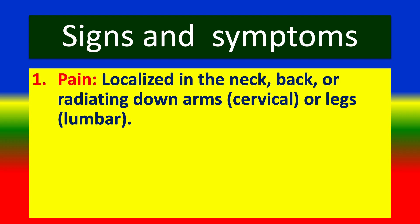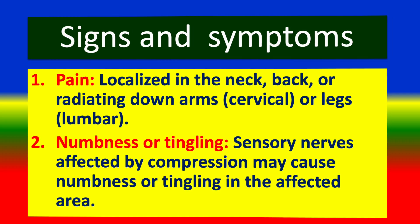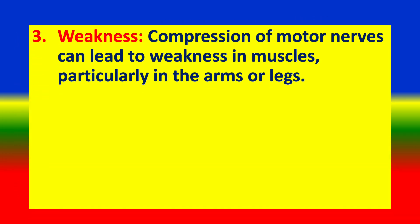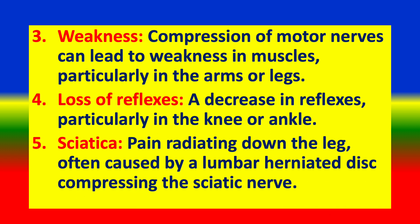Signs and symptoms include: Pain localized in the neck, back, or radiating down the arms or legs. Numbness or tingling — sensory nerves affected by compression may cause numbness or tingling in the affected area. Weakness — compression of motor nerves can lead to weakness in muscles, particularly in the arms or legs. Loss of reflexes — a decrease in reflexes, particularly in the knee or ankle. Sciatica — pain radiating down the leg, often caused by a lumbar herniated disc compressing the sciatic nerve.